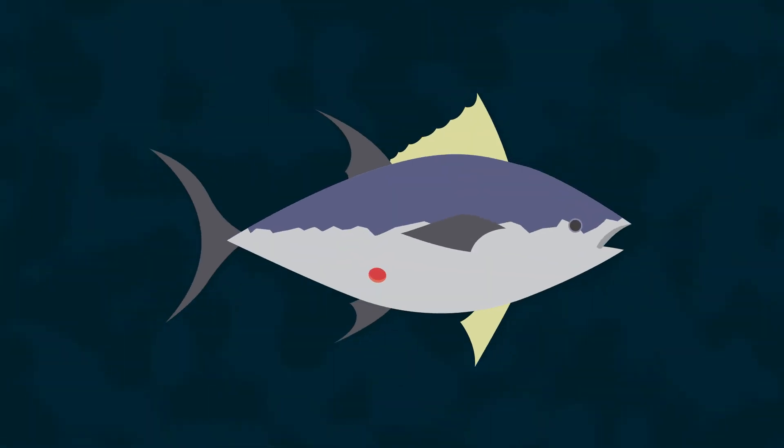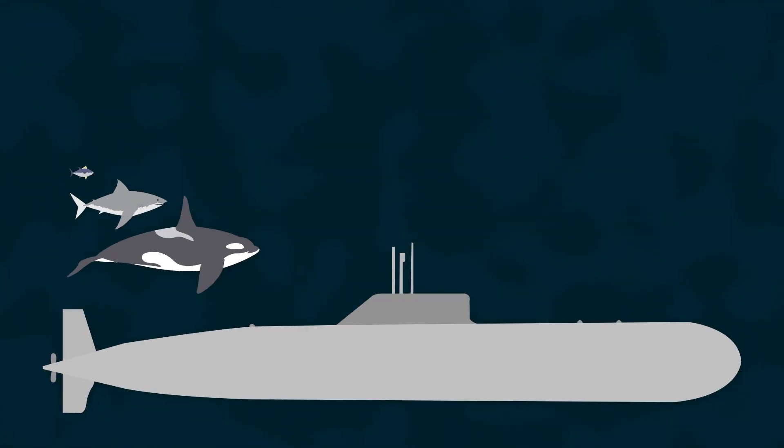This often doesn't kill the prey, but it does leave a pretty nasty scar. Cookie-cutter sharks have been known to attack tuna, great white sharks, orcas, and even submarines.